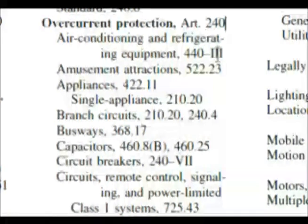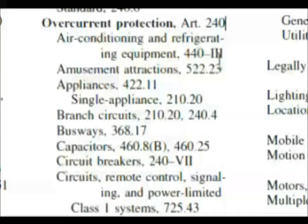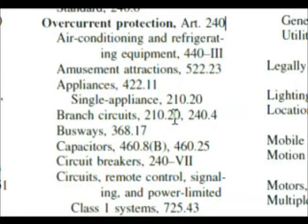Part of the way the codebook is broken up: you have articles — overcurrent protection is a major article. It references things like air conditioning at 440 dash Roman numeral III, and amusement attractions at 522.23. There are different naming conventions — Roman numerals, numbers, and letters. We're not going to get too involved in the names of all these sections and subsections, as that can be confusing. The main thing is the article, and then underneath I'll call it a section as we go through.